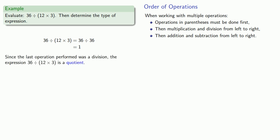And since the last operation performed was the division, 36 divided by 36, this expression, 36 divided by quantity 12 times 3, is going to be called a quotient.